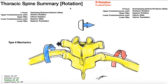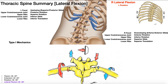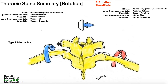With thoracic rotation, the typical passive range of motion is about 30 to 35 degrees. The big conceptual principle across all these movements — flexion, extension, lateral flexion, or rotation — is to think about whether there's less space or more space for the ribs. If there's more space, the ribs separate: upper ribs move up and lower ribs move down. If there's less space, the ribs approximate: upper ribs move down and lower ribs move up.